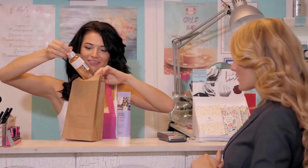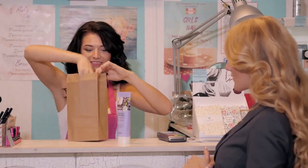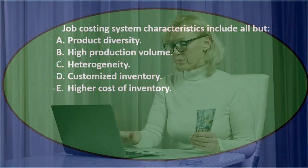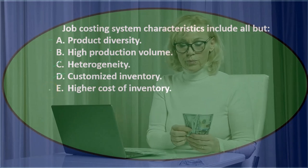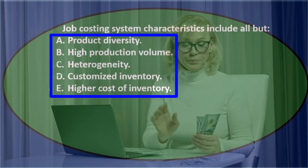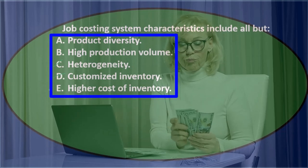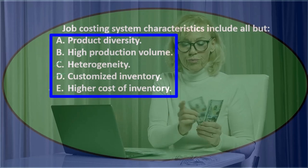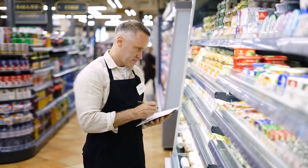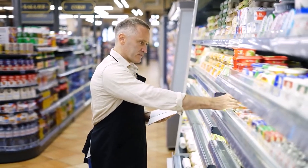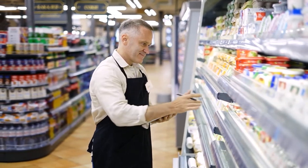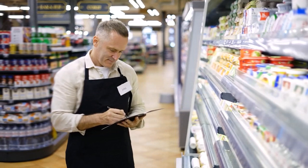Option E is higher cost of inventory. These characteristics all follow from the concept that job costing involves more differentiation in products. If products are more customized, they will have higher prices. In contrast, a process cost system aims to lower costs by making everything the same — so job costing typically has higher prices. That leaves us with A and B.